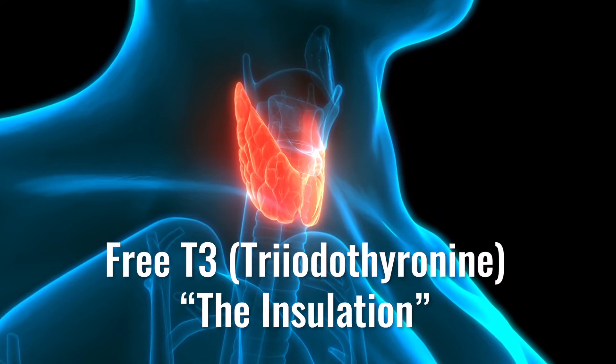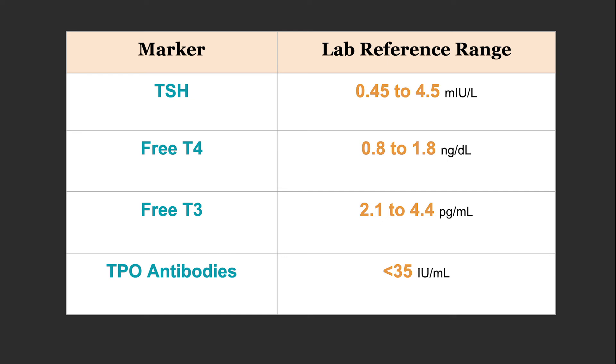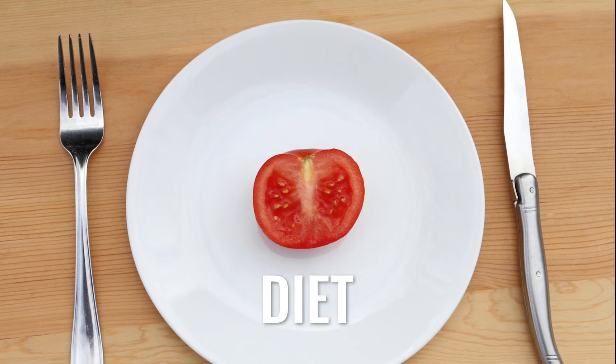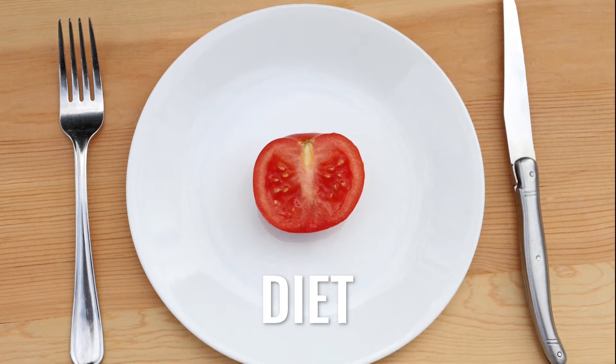Then there is free T3. T3 gives us a sense of the insulation — this is the active form. The range here is 2.1 to 4.4. Regarding insulation, it's important to bear in mind that stress, diet — too low calorie, too low carb — and inflammation can be akin to leaving a window open. If you're trying to get your bedroom warm and all the windows are open, it may not be the heater's fault. The heater may be making plenty of heat — free T4 — but the insulation may be poor and you're not able to get enough heat in the room.